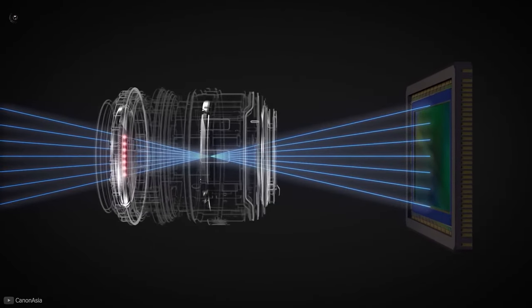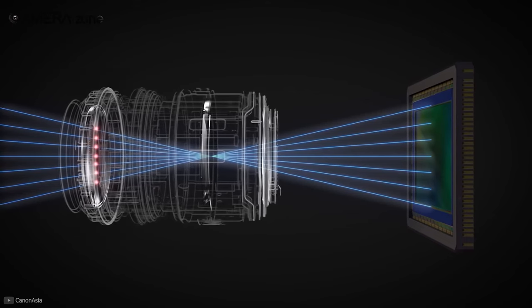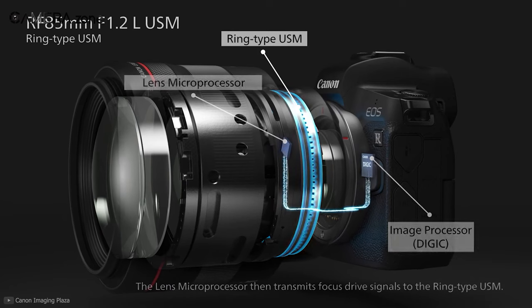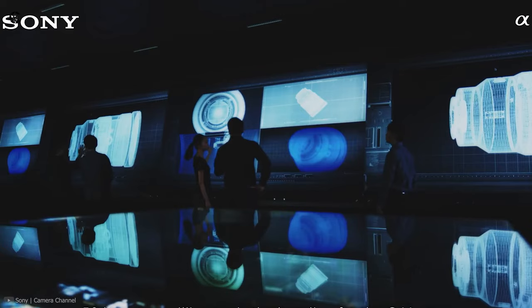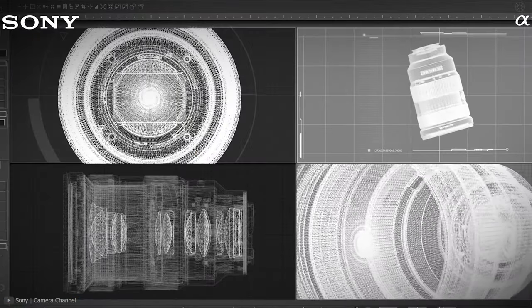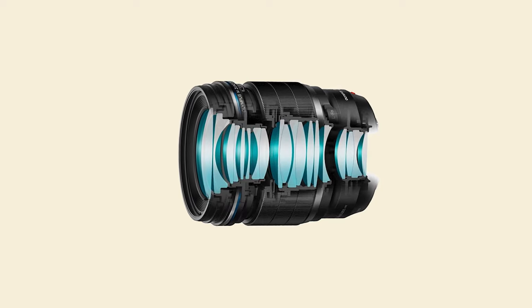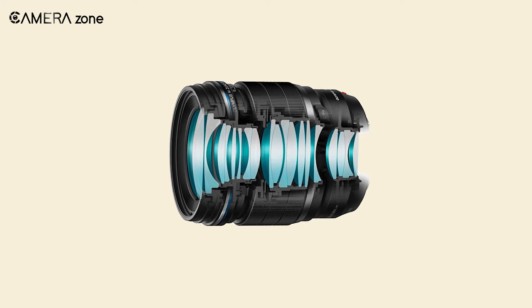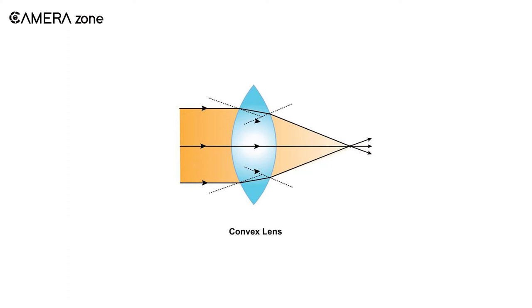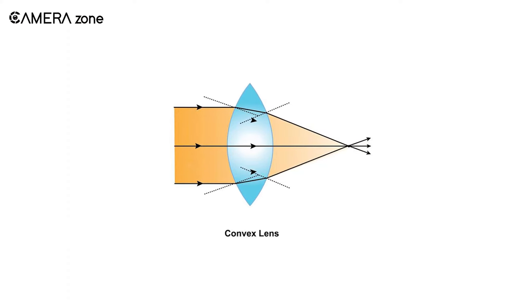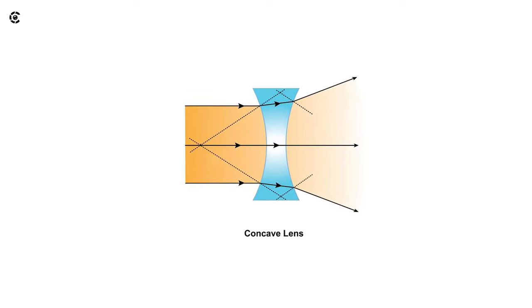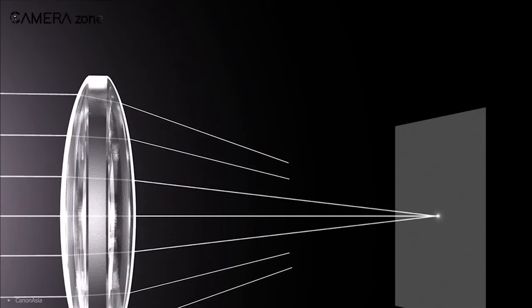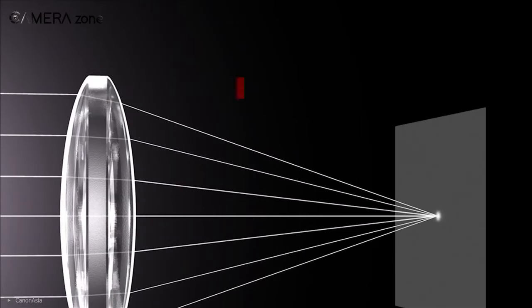The sole purpose of a lens is to project the image of your desire on the camera's sensor. To accomplish this purpose, a lens comes with different parts, each having a specific role to perform. There is a near identical way in which every lens functions. Most lenses are made of convex and concave lenses or a combination of both. Lenses that are thicker in the middle are convex lenses, while lenses that are narrow in the middle are concave lenses. When light passes through a lens, it bends a little, which is called light refraction.